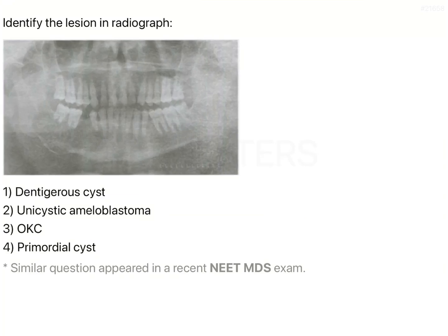The question is to identify the lesion in the radiograph. I'm sorry that the picture is a little blurry, but I've zoomed it up in order for you to visualize it properly. If you look at this image, you can see that there is some form of radiolucency which is present at the apices of the molars as well as the premolars, and it is extending in the antero-posterior direction.